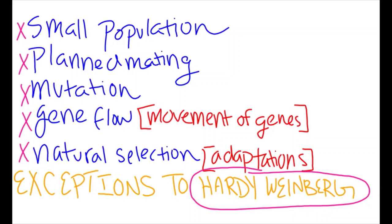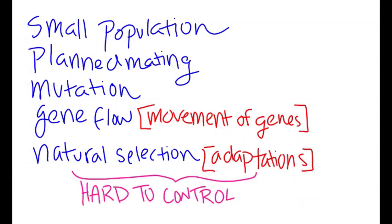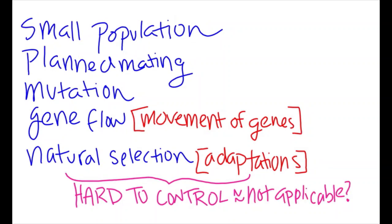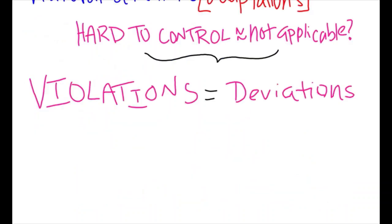So in order to use the Hardy-Weinberg Principle, all of these exceptions must not exist in a population. Yet a lot of these exceptions are naturally occurring and are very hard for scientists to control. So what's the point of this principle if it cannot be applicable to real-world populations? Well, it's the violations of the Hardy-Weinberg Principle that actually tell us a lot, as we see the ways in which the real-world values deviate from our expected values.